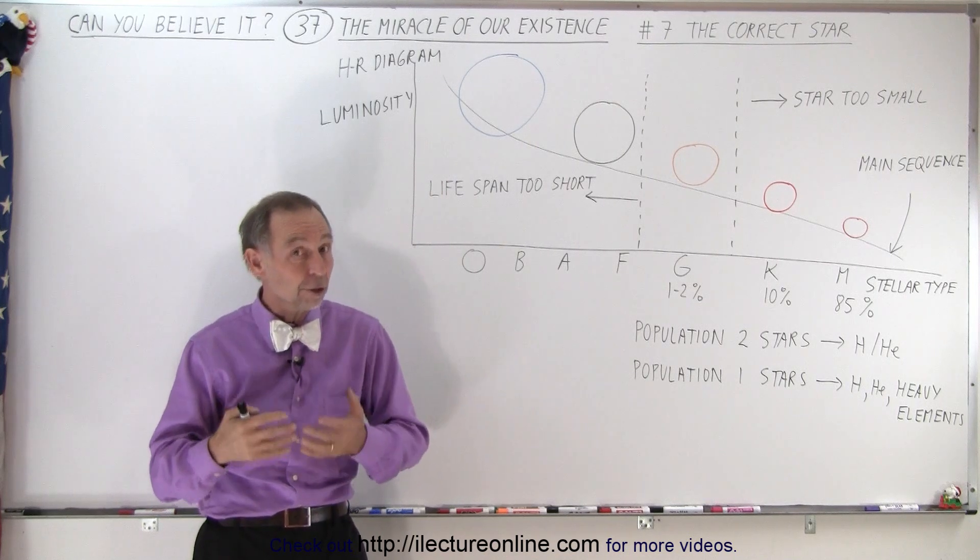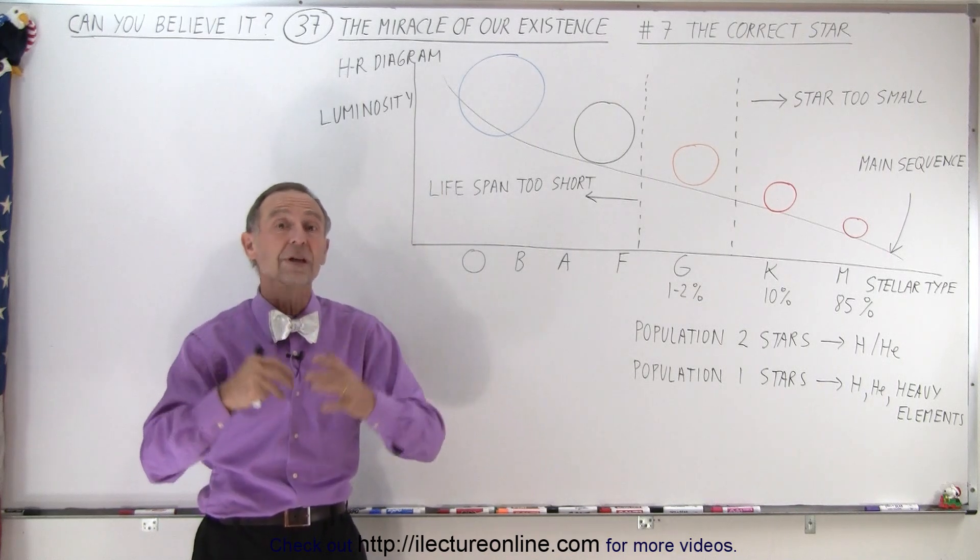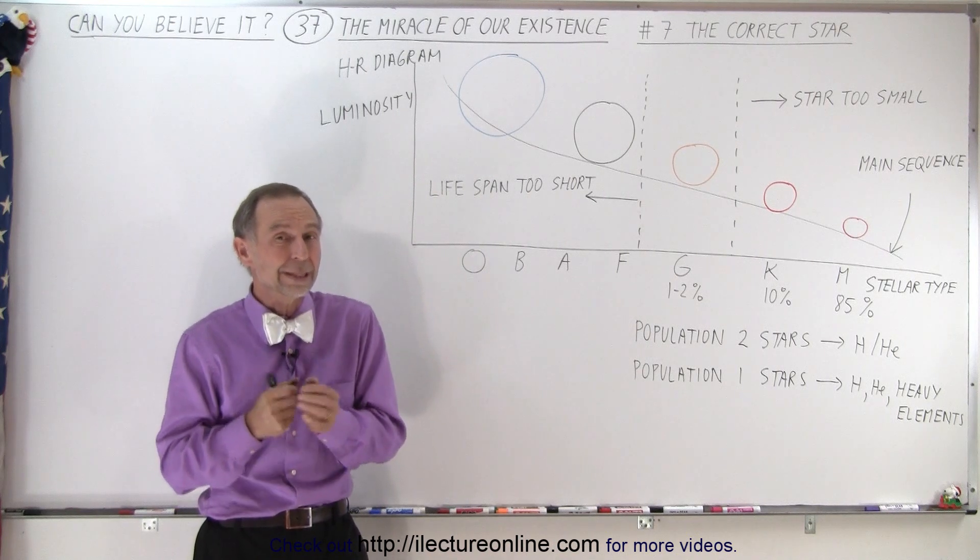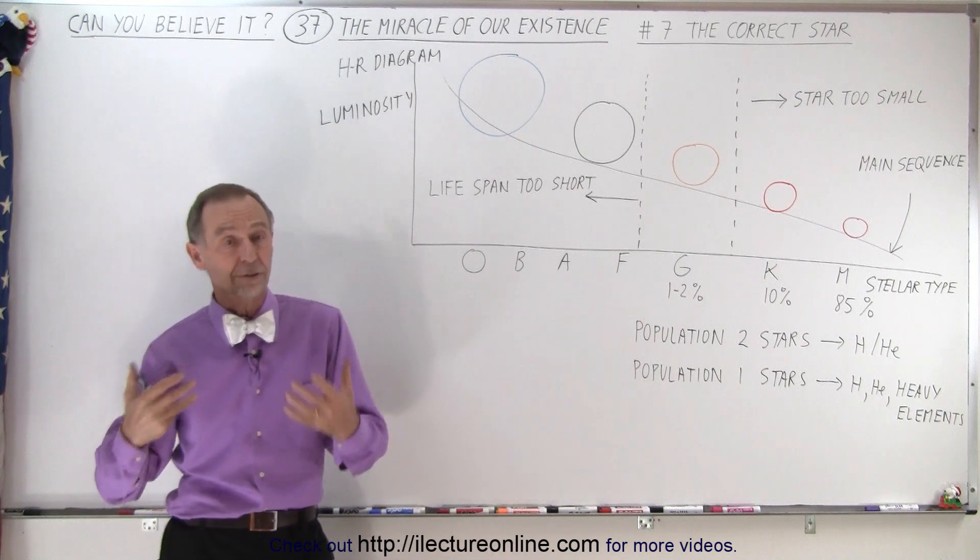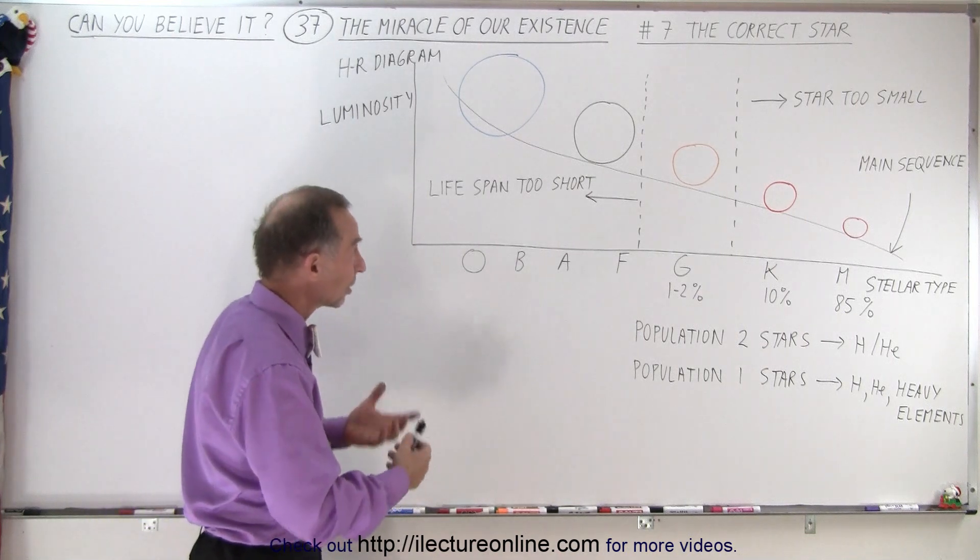So Earth is a very unusual planet just with those things considered alone. But then not only do you need the right planet, you also need the right star. And there's all kinds of different stars in the galaxy and in the universe.